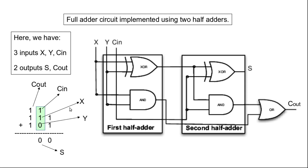To illustrate the inputs and outputs further, if we consider the second stage: we had the original two bits 1 and 0, so this would be X and Y. The carry out of the first stage, which is provided as carry in to the second stage, that would be our C-in input. This circuit produces two outputs S and C-out. The carry out of the second stage becomes the carry in for the third stage. This clarifies what the inputs and outputs of the full adder are.